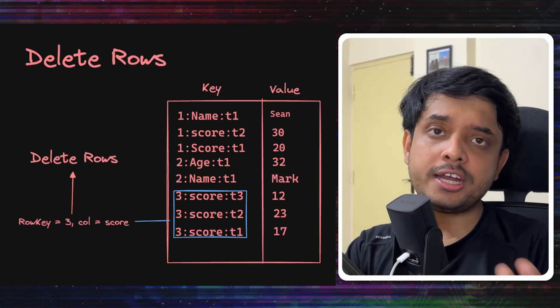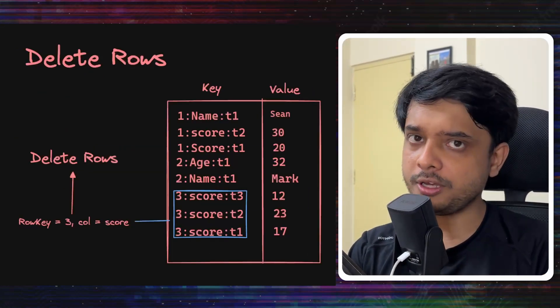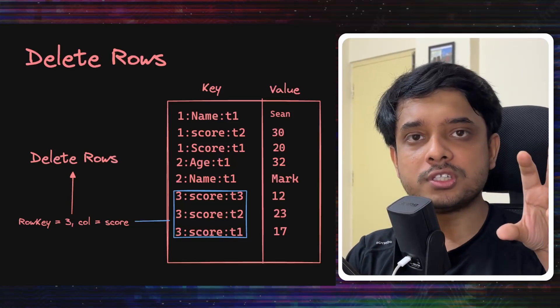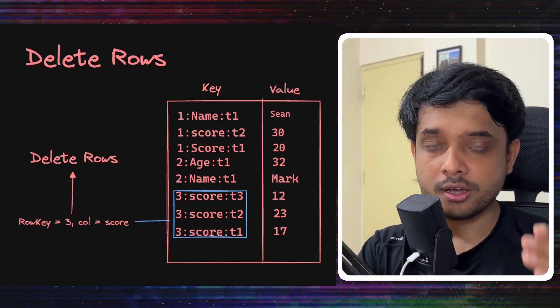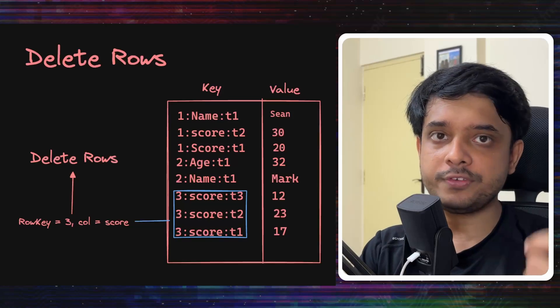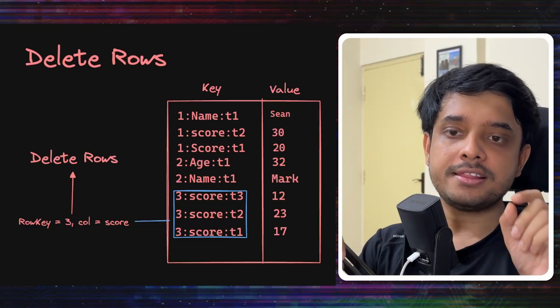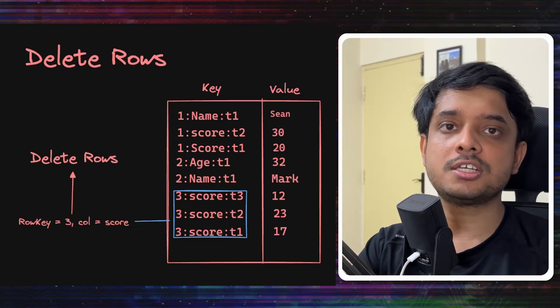Now deleting values given a row ID or given a row ID and a column name shouldn't be difficult. Think about it. We can use the same method to identify the keys as we did for get rows using prefix searches and full key searches. And then we can delete those keys from RocksDB.